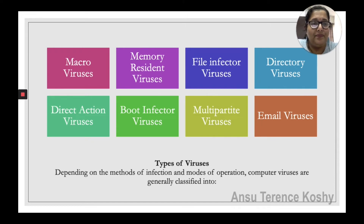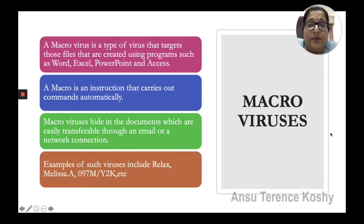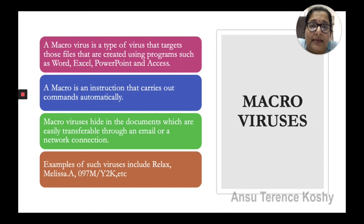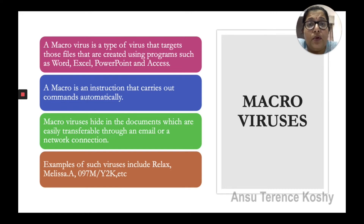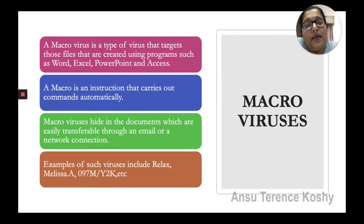The first type is macro viruses. A macro virus targets files created using programs such as Word, Excel, PowerPoint, and Access — that is, it usually targets the Office suite. A macro is an instruction that carries out commands automatically following a given set of rules. Macro viruses hide in documents which are easily transferable through email or a network connection.